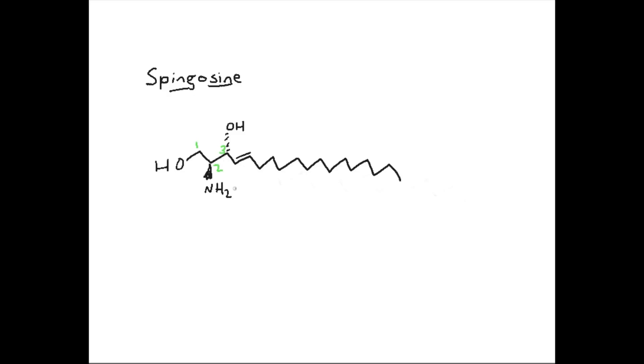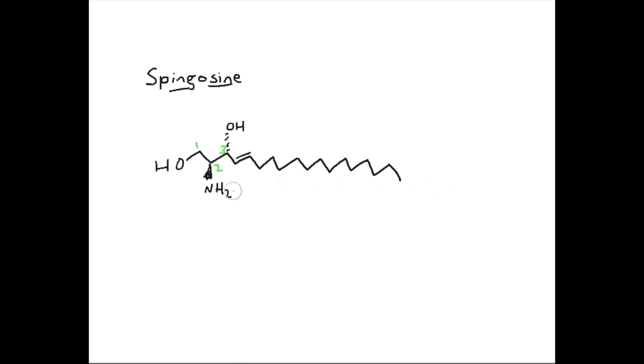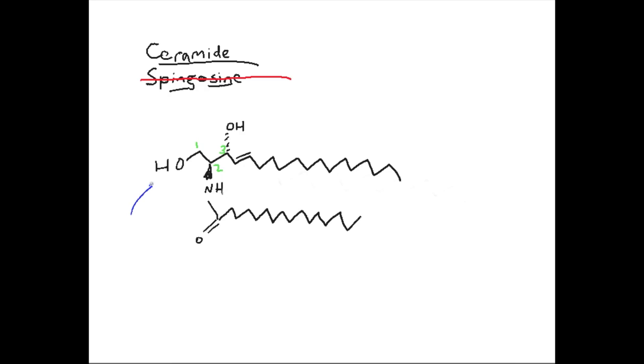Now attached to the C2 carbon, you get a fatty acid. And when you get one of these fatty acids attached, you get this complex called a ceramide. And usually the fatty acid is a 16, 0, 18, or 20, 22, or 24 is usually what it's attached.